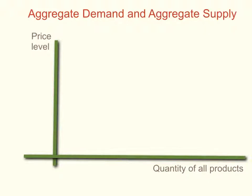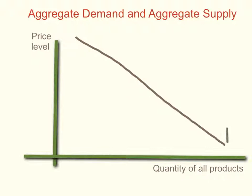Aggregate means the sum total of everything. So instead of a demand curve for an individual product — for example, the demand for strawberries, which is a downward sloping demand curve — when the price goes down, people will tend to buy more. This is aggregate demand, so this is total demand for all goods and services in a particular economy. The aggregate demand curve is also downward sloping, so if we graphed an aggregate demand curve, it would look something like this. We just call it AD, aggregate demand.